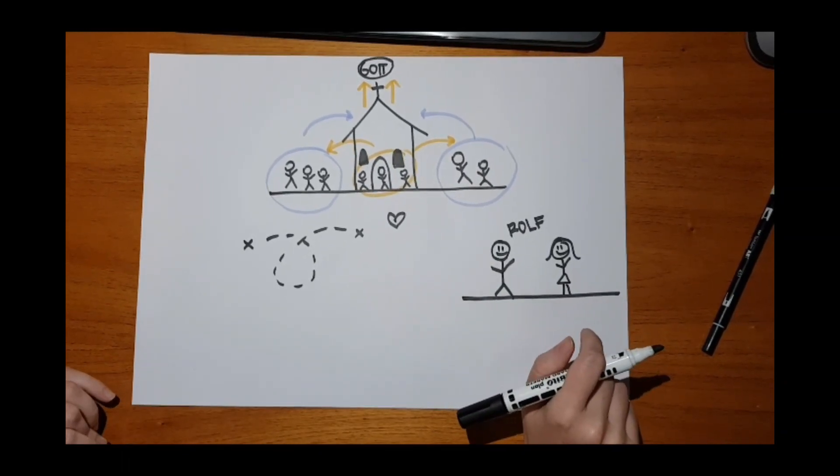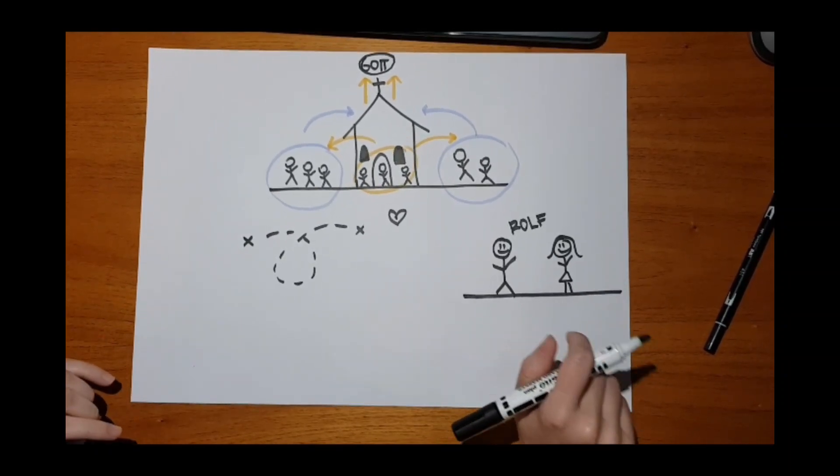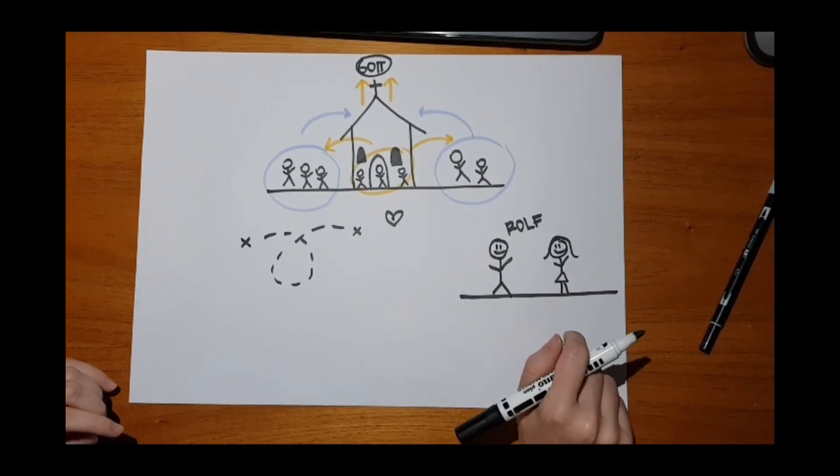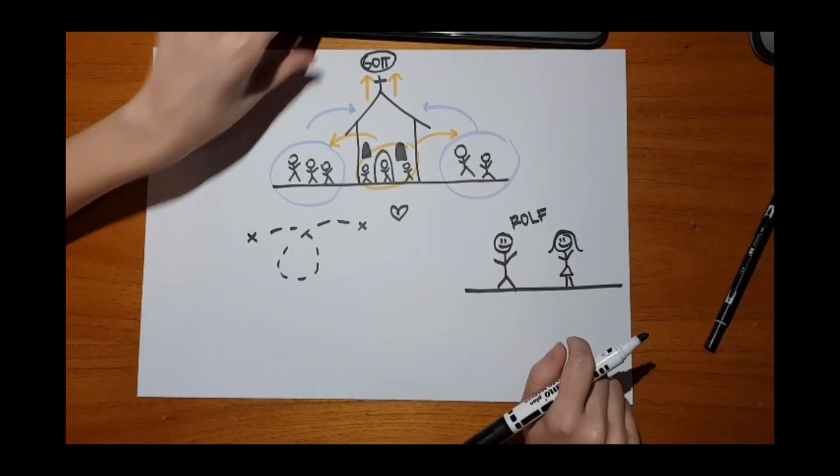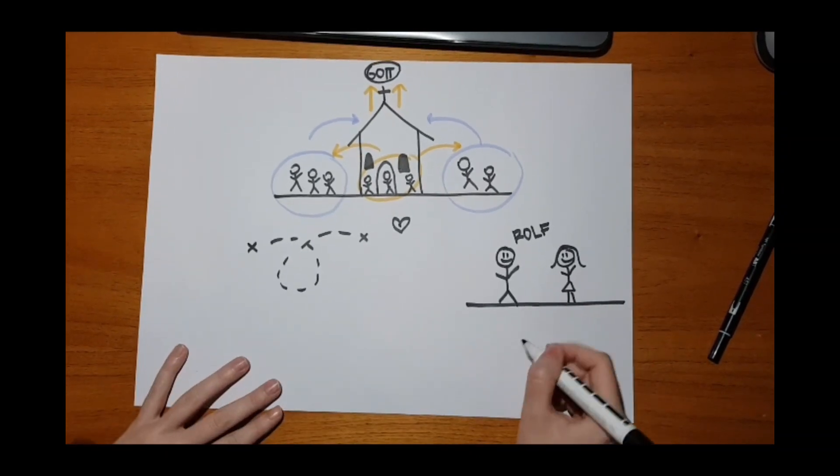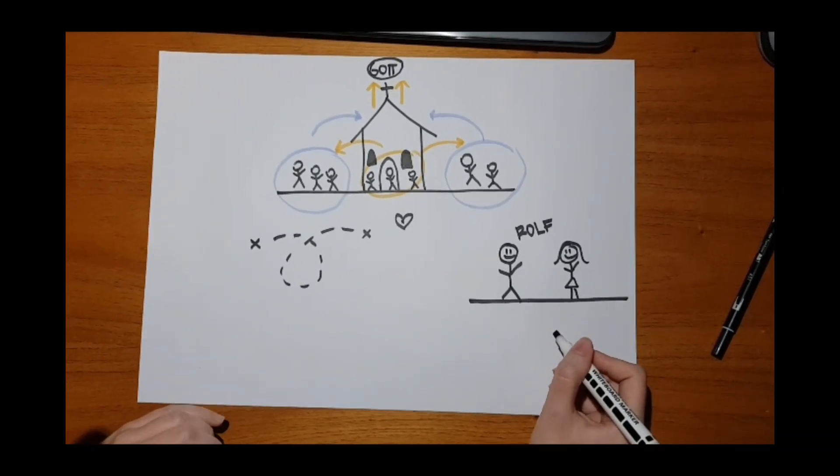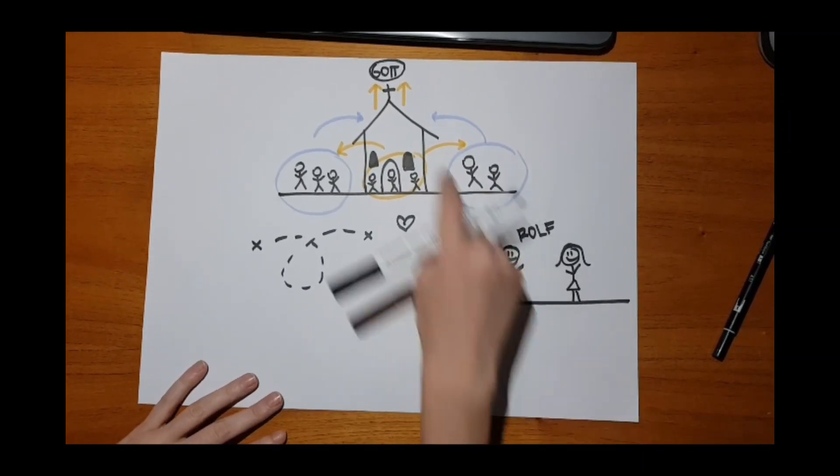Seine Lehrerin verstand noch nicht so richtig, warum Rolf nicht lieber ein Polizist werden wollte oder vielleicht ein Fußballspieler. Als es zur Pause klingelte, blieb Rolf bei seiner Lehrerin und erklärte ihr von Gott und dass er seinen Sohn Jesus auf die Welt geschickt hat, damit alle Menschen in den Himmel kommen können und bei Gott wohnen können.